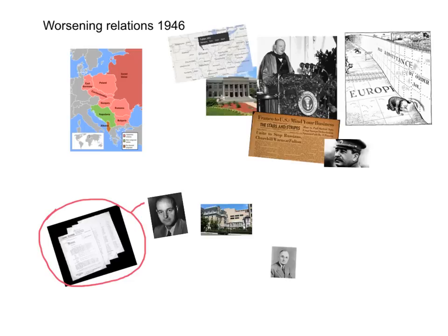In this video we're going to look at how from 1946 onwards relations began to get worse between the USSR and the USA. There are three key events in 1946: a speech by Winston Churchill where he talks about an iron curtain dividing Europe, and two telegrams that were sent — one from the USA, one from the USSR — and both of those escalated tensions.